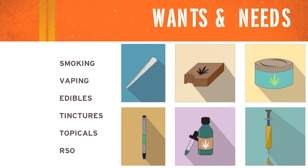You're going to want to have different ones and needs for your consumers. So you're going to want to have a wide variety of different things that they can smoke, vape, different edibles, tinctures, topicals, RSO — and these are different products that are going to be for different consumers.